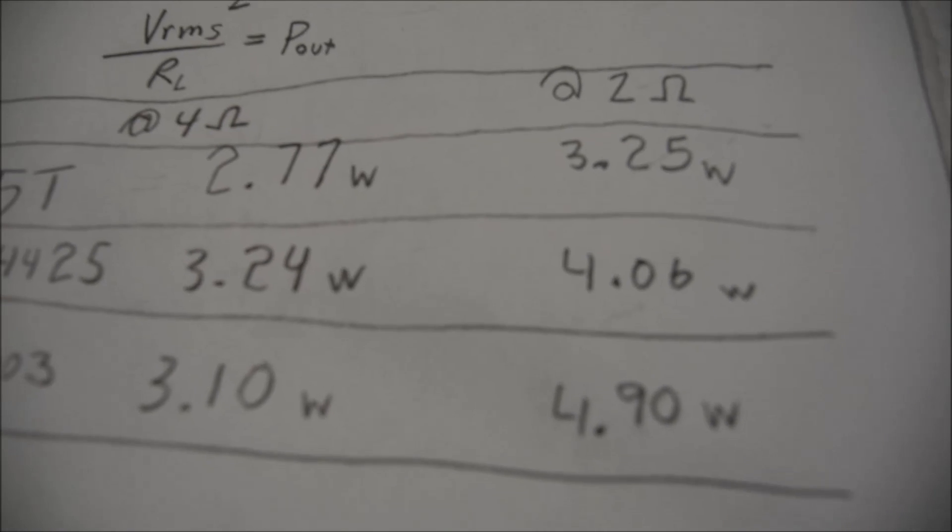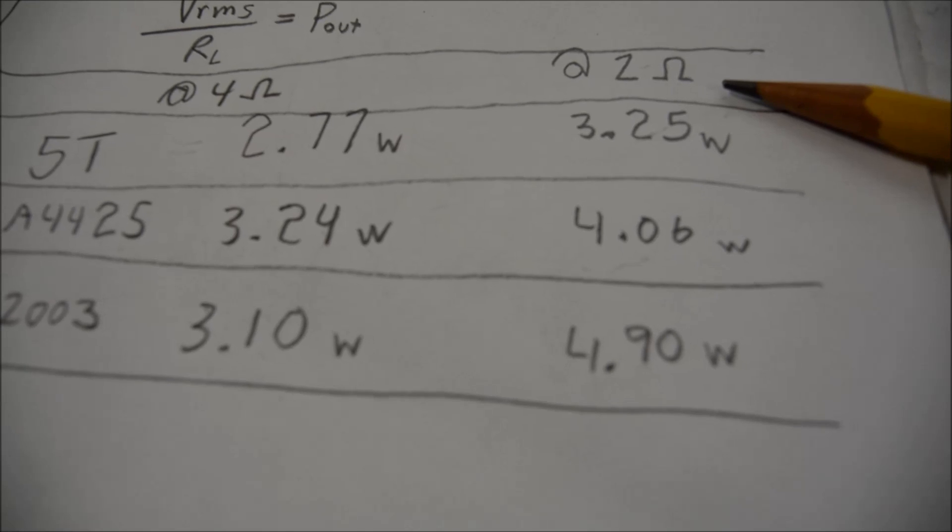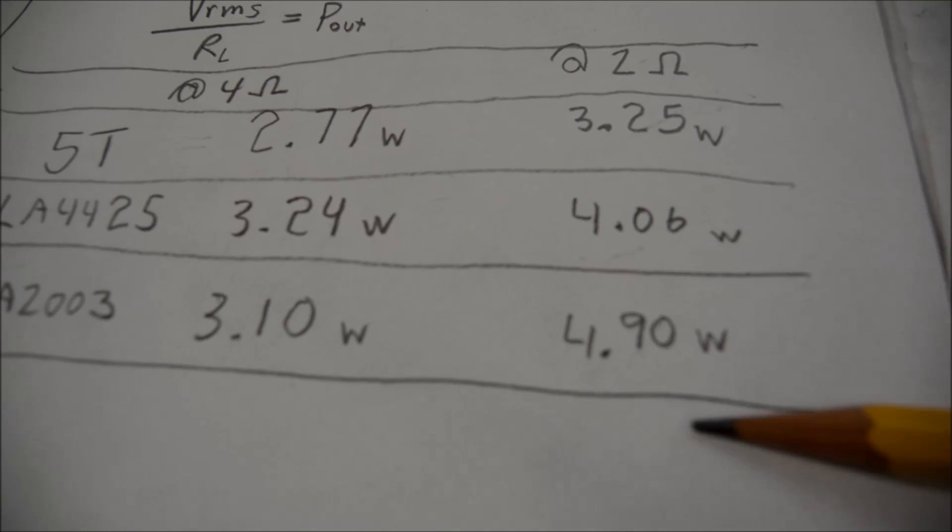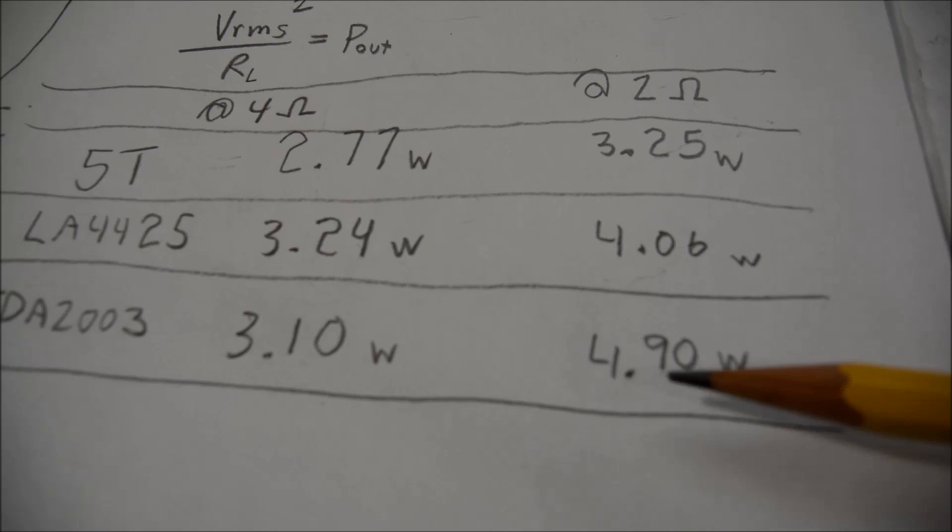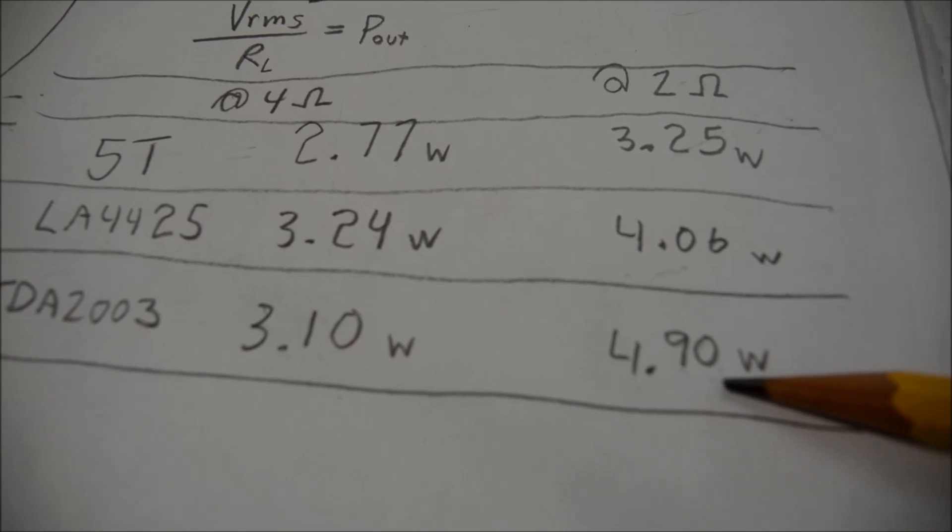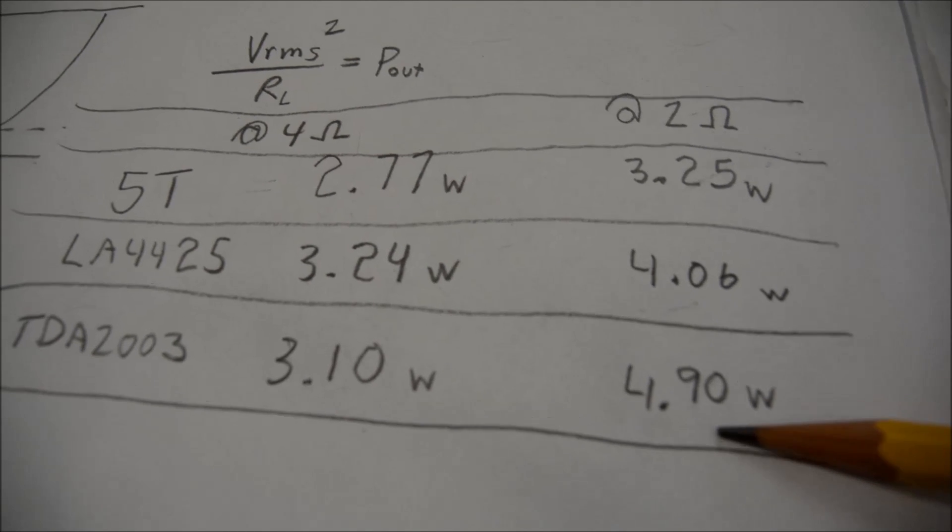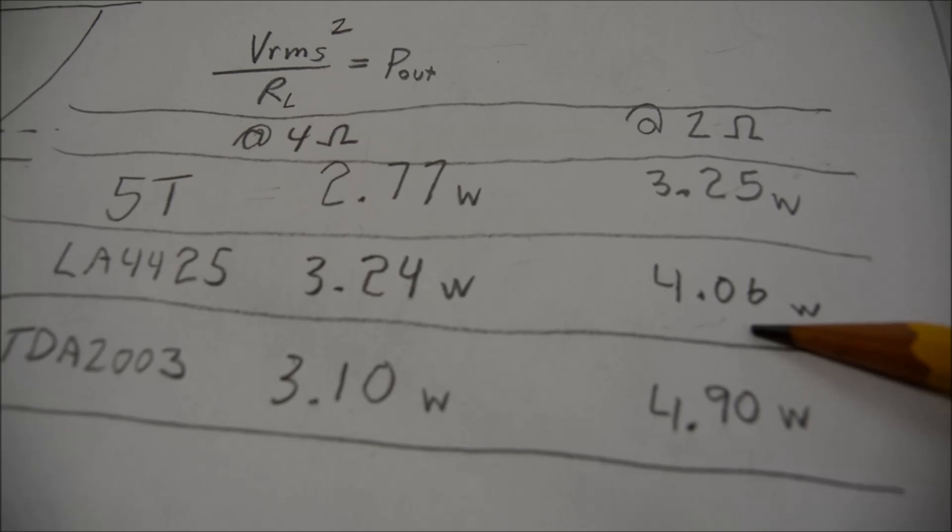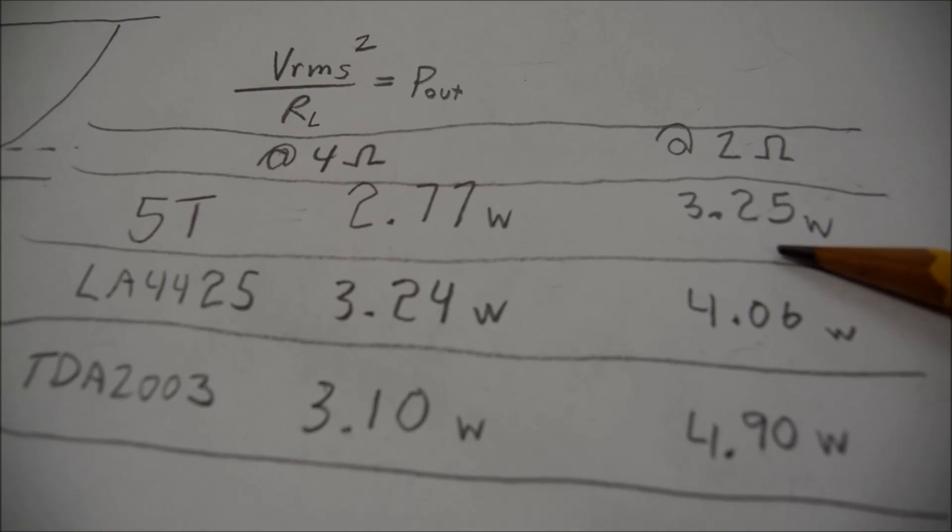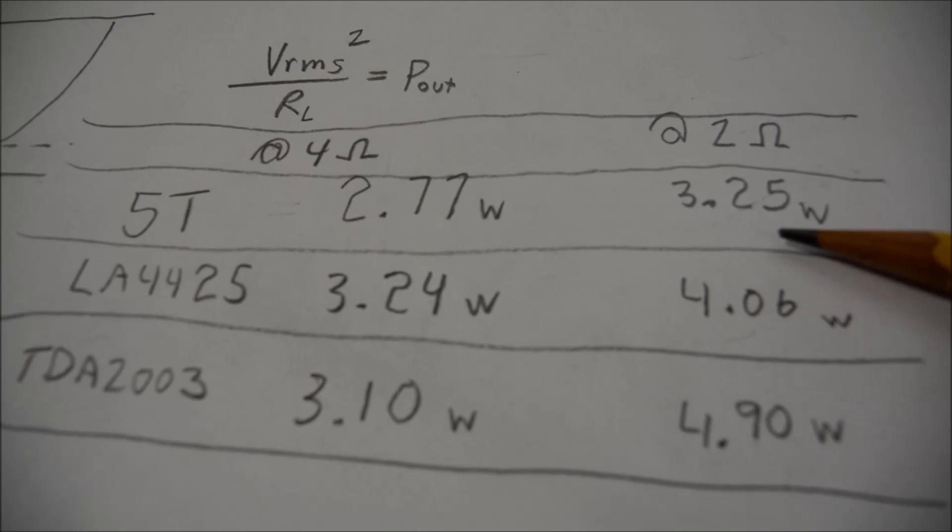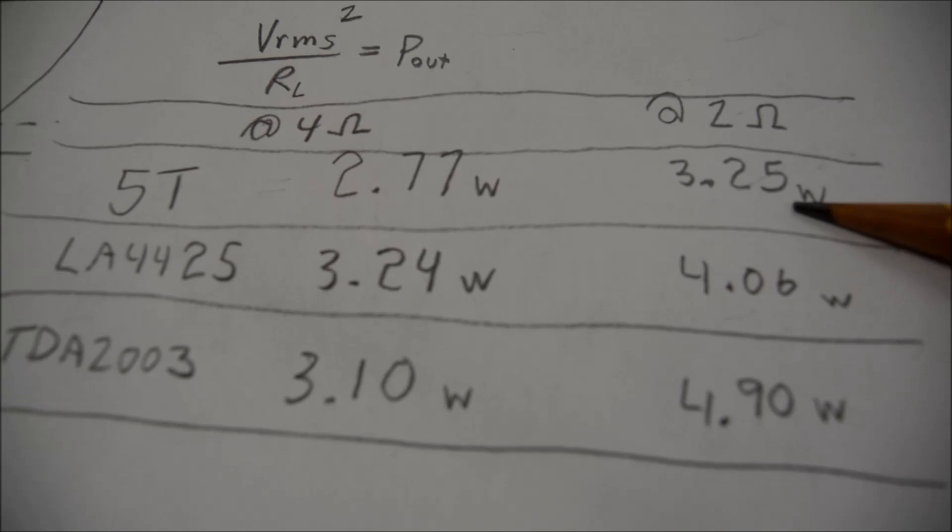I also measured at 2 ohm loads, and this is interesting. The TDA2003 came in at 4.9 watts, far ahead of the LA4425 at 4.06 watts and quite a bit ahead of the five transistor amp that had 3.25 watts of output.